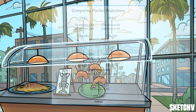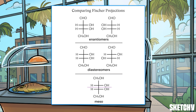Fischer projections make categorizing stereoisomers much easier. Two enantiomers will have mirror-image Fischer projections — all functional groups that appear on the left side of one molecule will appear on the right in the other. Two diastereomers will have Fischer projections in which the configurations at some but not all stereocenters are inverted, so some functional groups switch positions while others remain in the same place.